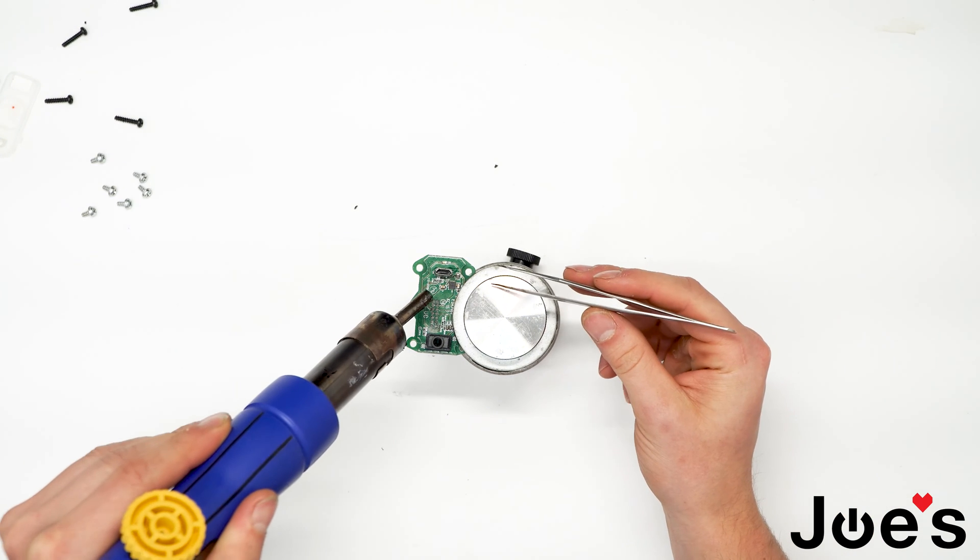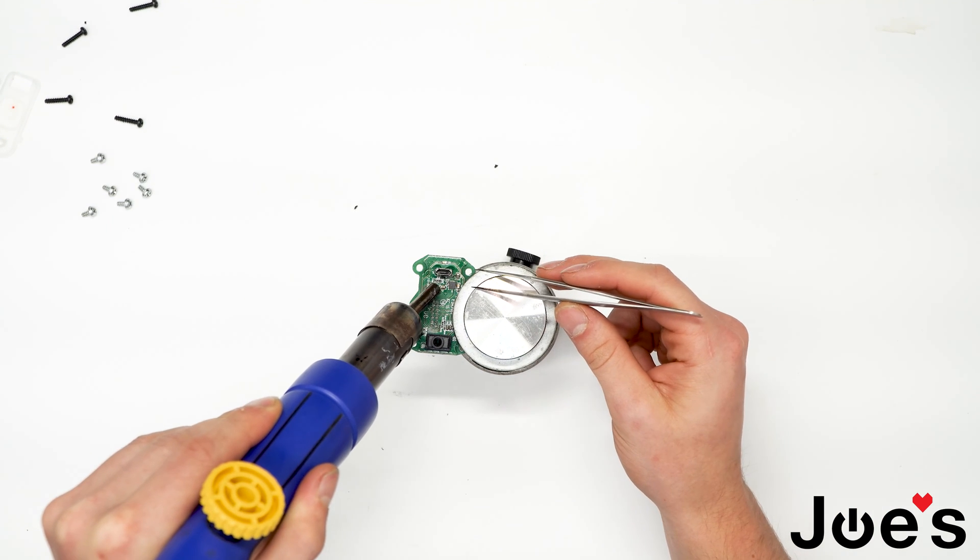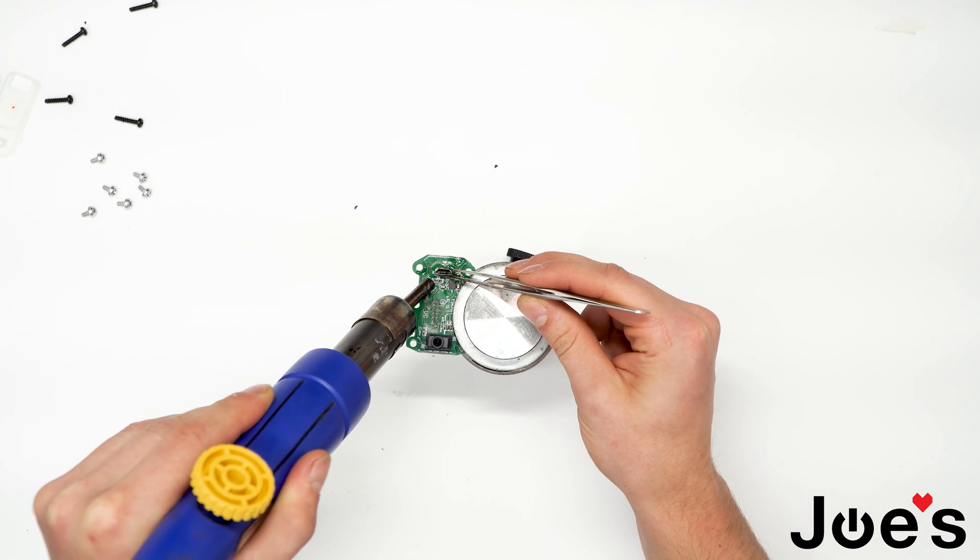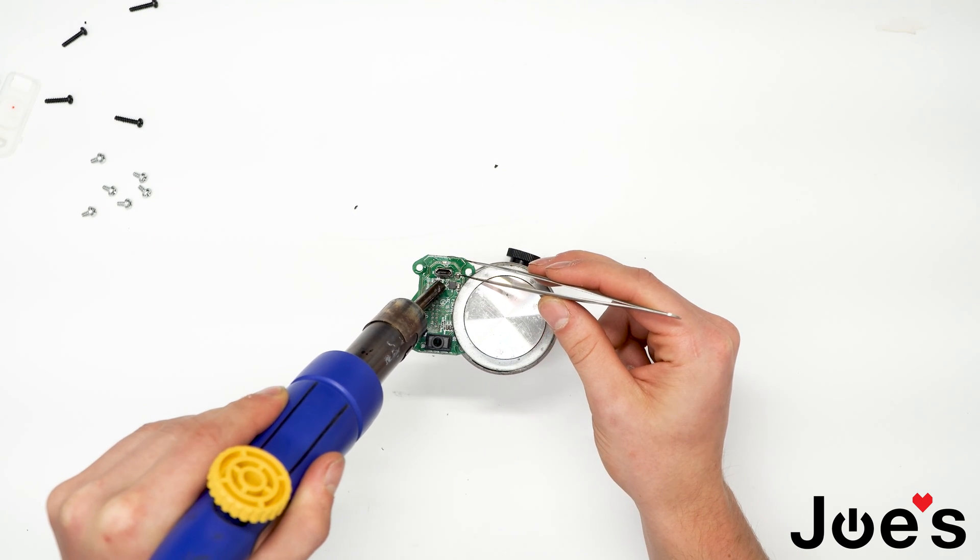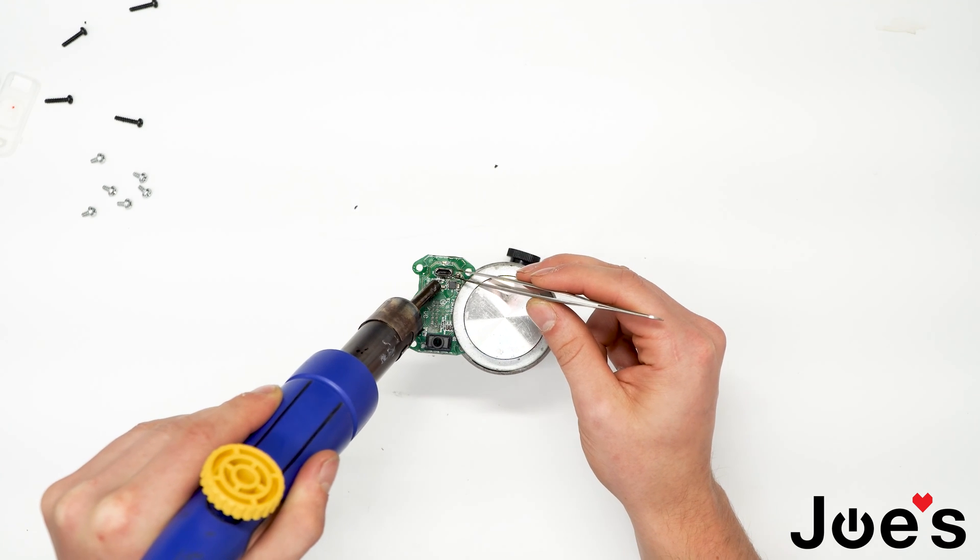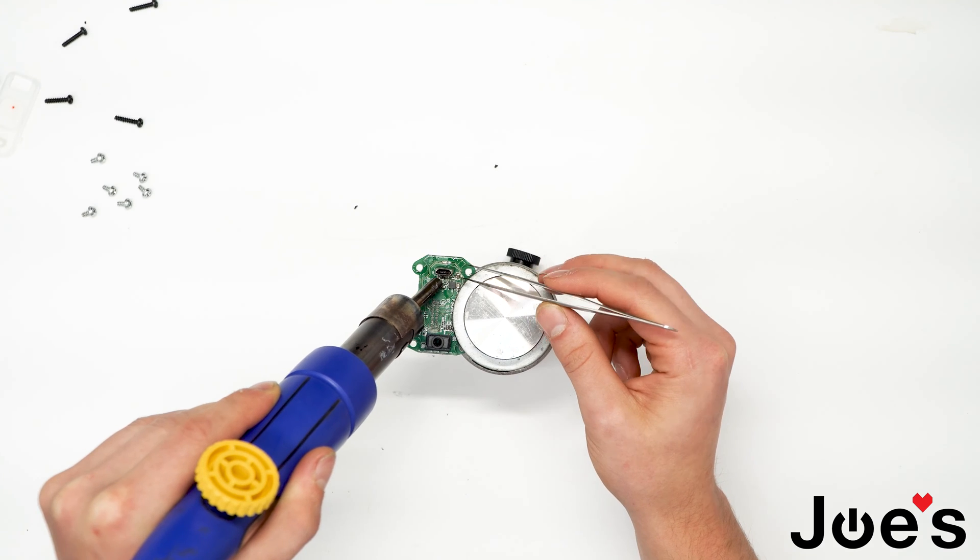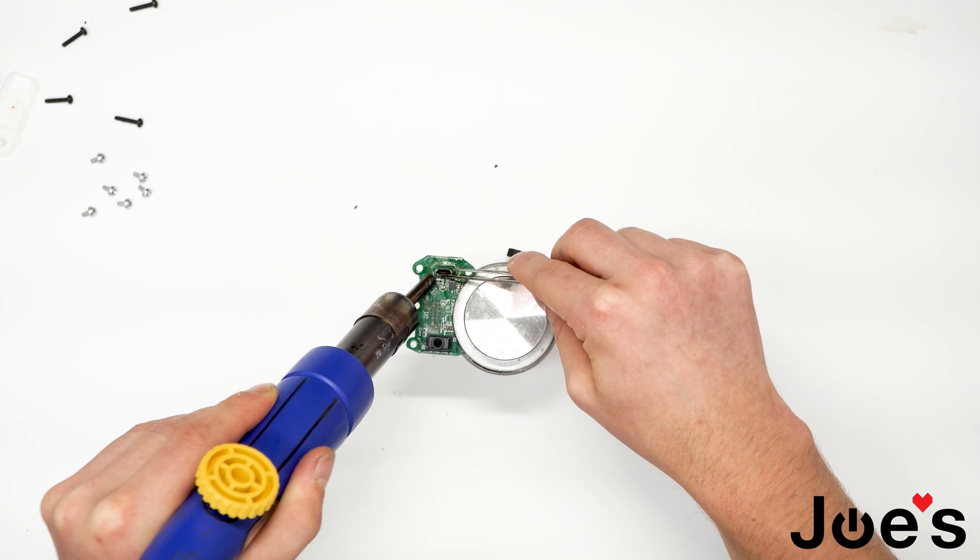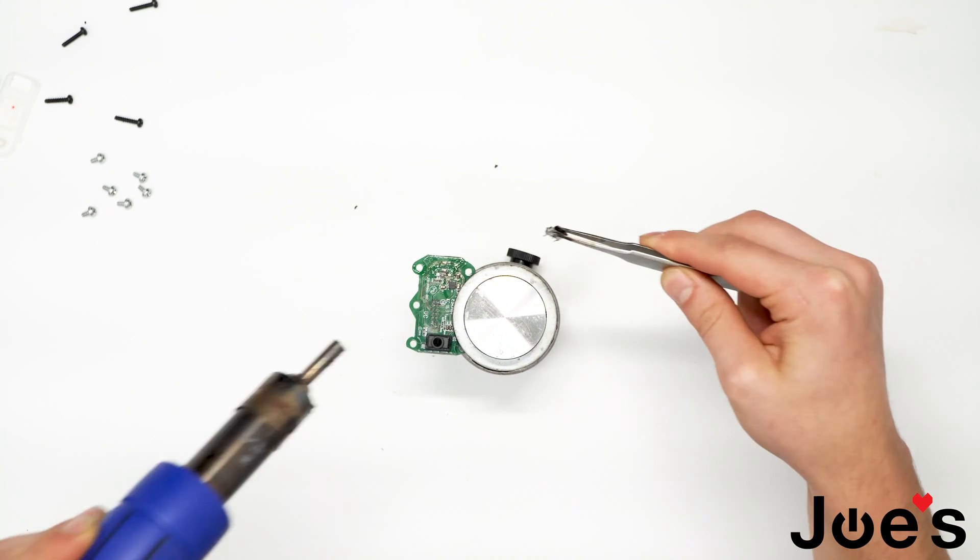Let's go ahead and apply heat to the PCB. Once it starts wiggling, then you can make your way and pull it out like so.